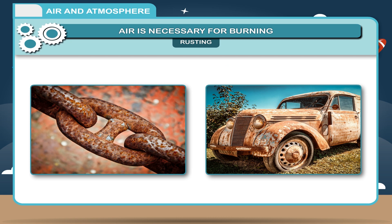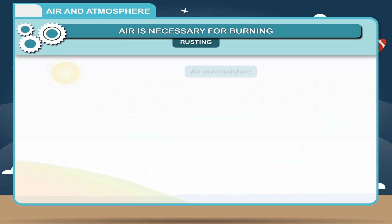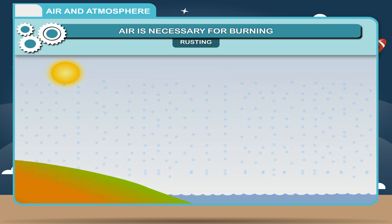As it is evident from the definition, two important conditions for rusting are air and moisture. Let us perform an activity to check it out.